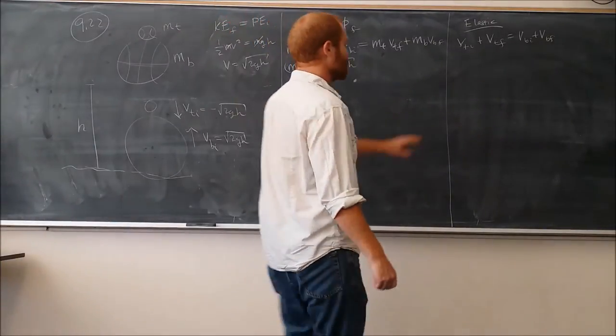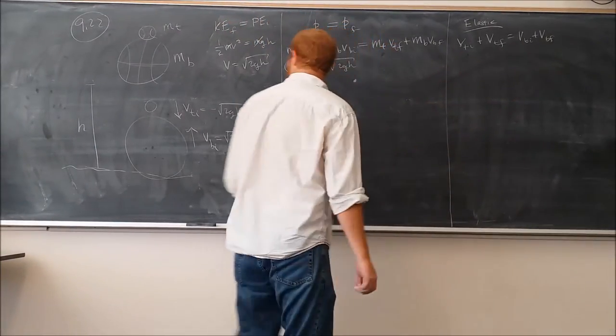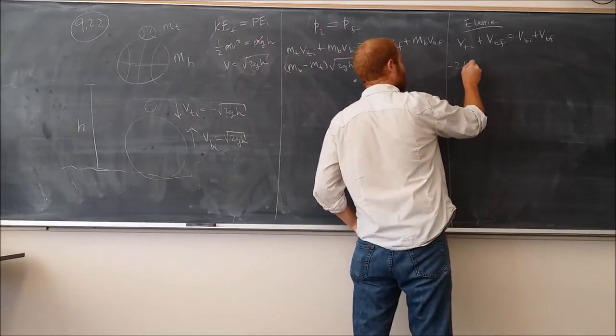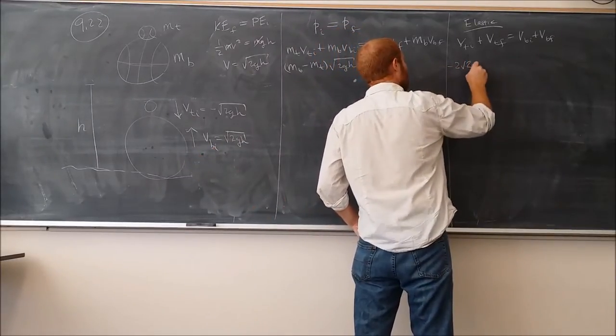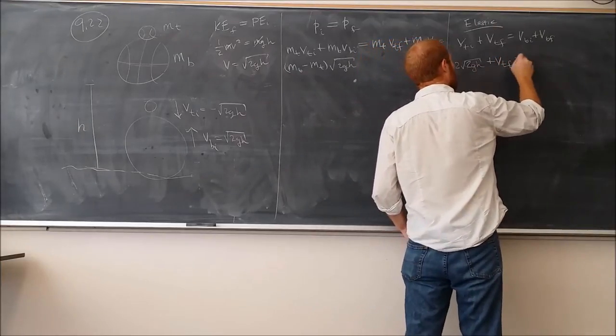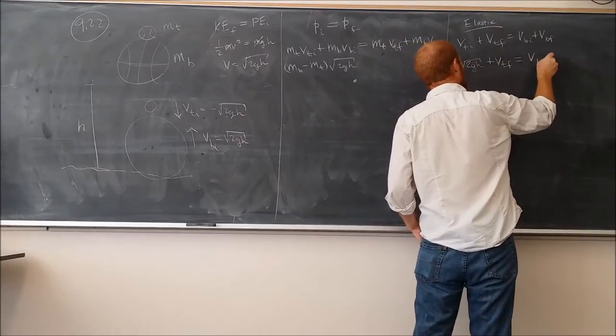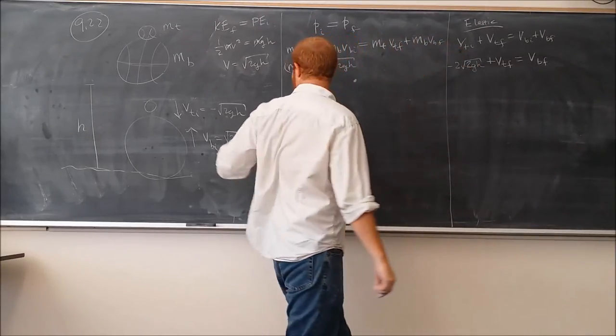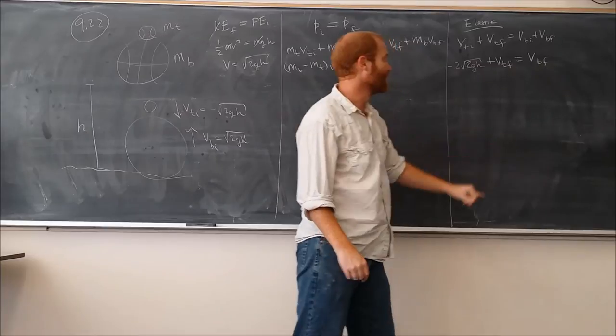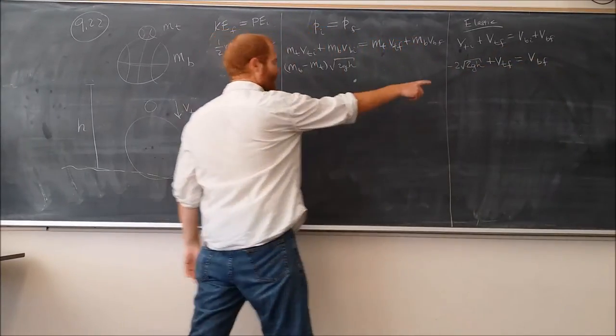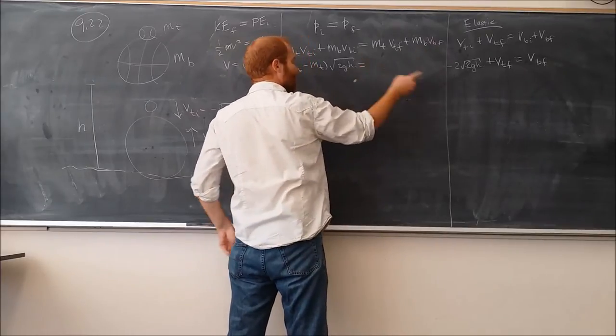So now what we need to do is to replace VTI and VBI using the same thing here. What we're going to get is negative 2 times the square root of 2gh. I have a minute of a step here where plugging in for this one, you get negative root 2gh. You plug in for this one, you get positive root 2gh. We subtract one to this side. We're now going to replace VBF in this equation here with that.